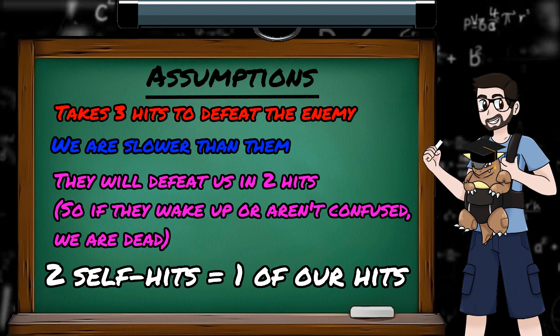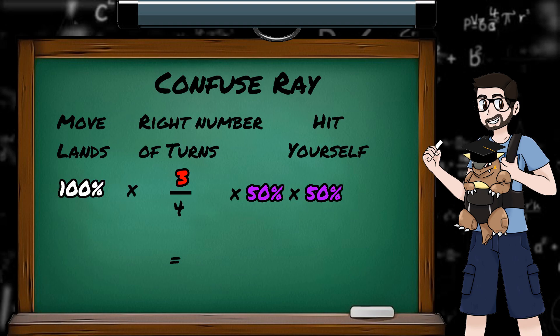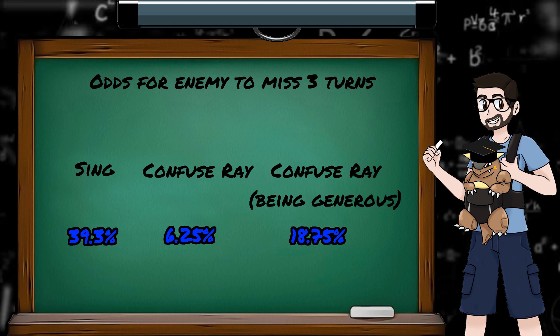To give Confuse Ray a slightly better chance, let's say confusion damage from 2 self-hits is the same as 1 of our attacks. So we only need to hit them twice, as long as they hit themselves twice too. So they can be confused for one less turn now, and only need to hit themselves twice instead of 3 times. That gives us 100% times 3 out of 4 times 50% times 50%, which gives us 18.75%. That's given us much better odds, but Confuse Ray is still less than half as likely as Sing's 39.3%.